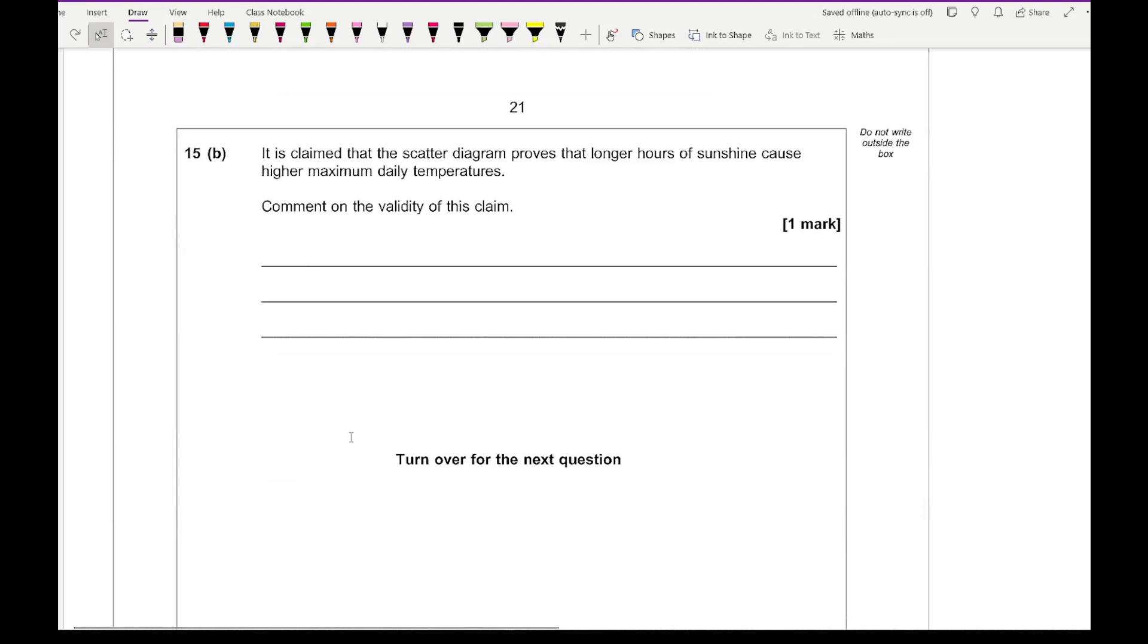For 15B, it says it is claimed that the scatter diagram proves that longer hours of sunshine cause higher maximum daily temperatures. Comment on the validity of this claim. There's a number of things you could say, in terms of just because it's long hours of sunshine doesn't mean that the temperature is going to be high. I think on the official mark scheme, one of the template answers they wrote is that it's invalid as correlation does not imply causality. Something along those lines would be fine for that one mark.